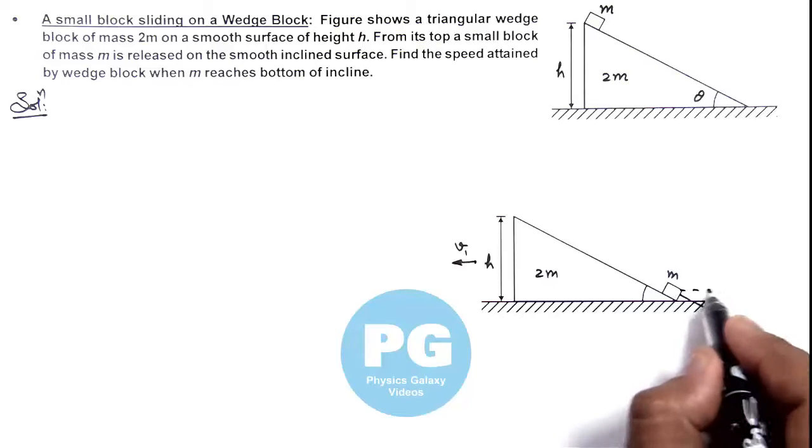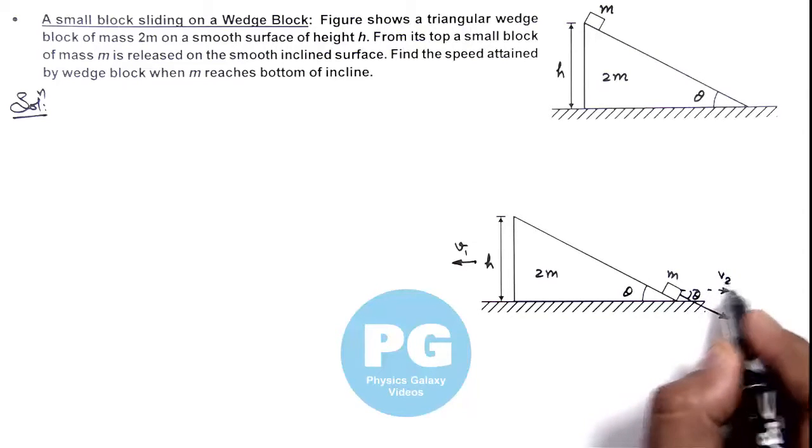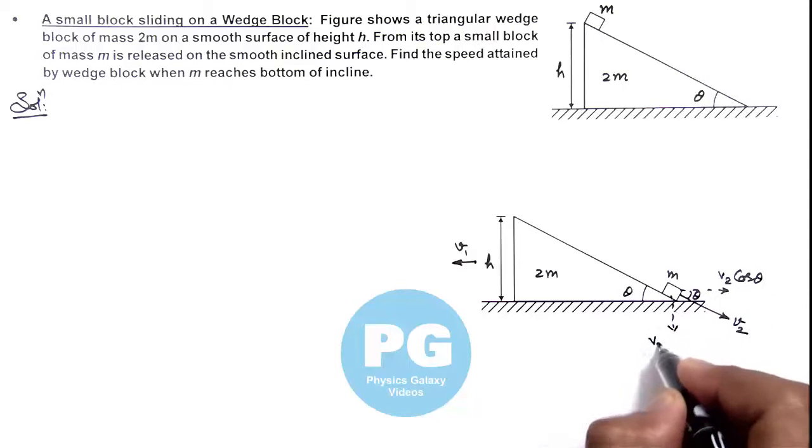Then it'll have two components of v2. If this angle is theta, this will be v2 cos theta, and in downward direction it is v2 sin theta.